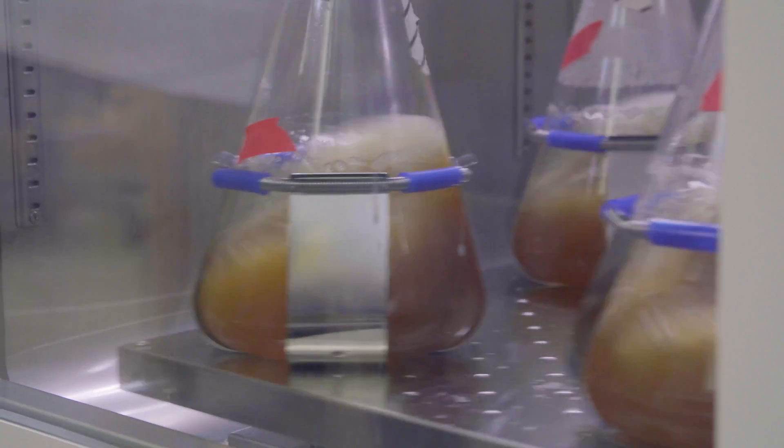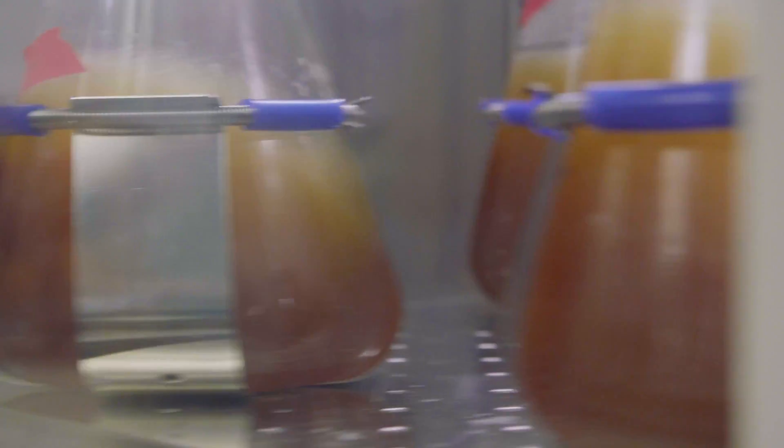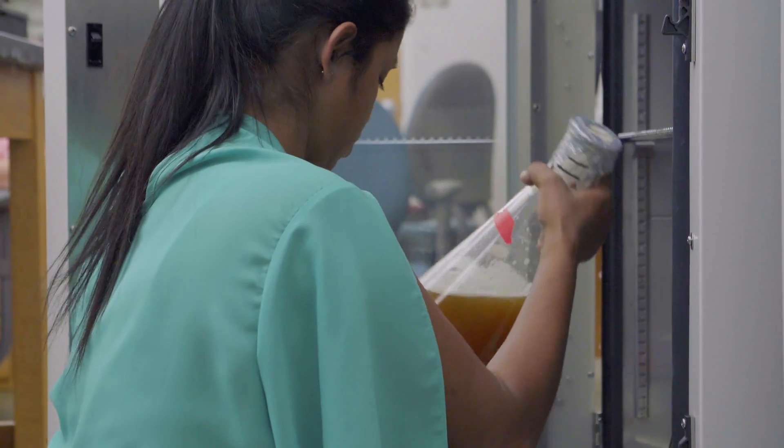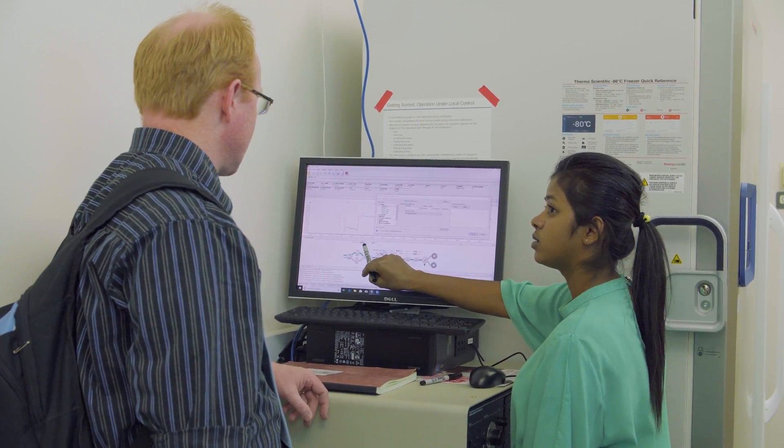Every medicine you take interacts with something inside your cells or on the surface of your cells, and many of those things are proteins. When things go wrong, such as in cancer, often it's because a protein is broken or missing or there's too much or too little of it. Understanding how cancer works and understanding how drugs work really depends on having a picture of the protein in question.